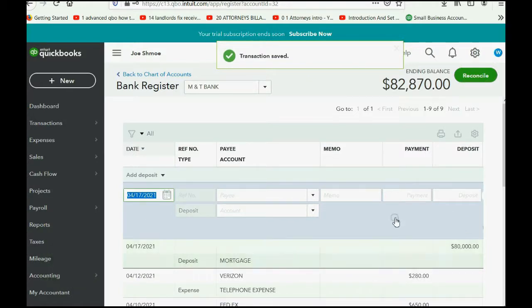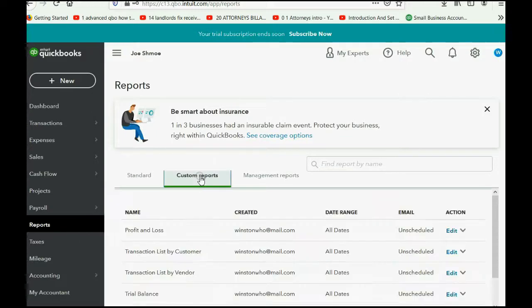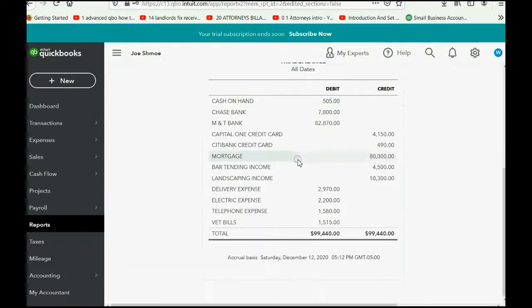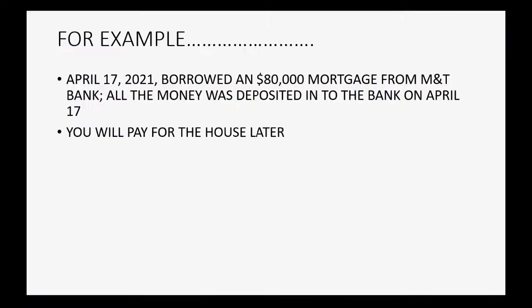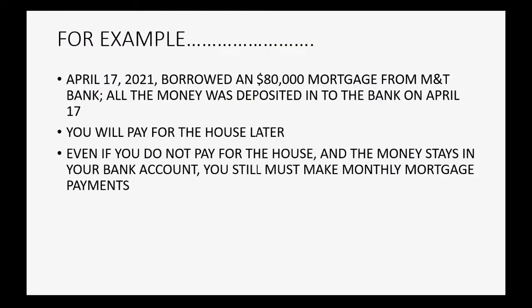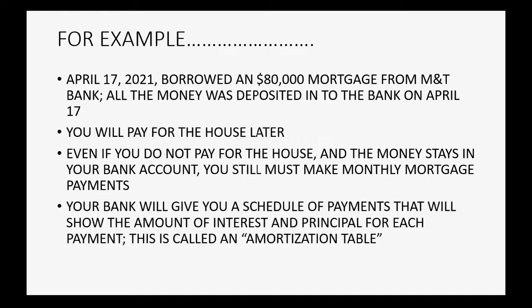Now let's take a look at the results. When we click Reports and then Custom Reports, Trial Balance, you can see there's an $80,000 mortgage, and you can see $80,000 has been added to the M&T Bank account. You should know that even if you do not pay for the house and the money stays in your bank account, you still must make monthly mortgage payments. Your bank will give you a schedule of payments showing the amount of interest and principal for each payment — that's called an amortization table — and we will talk more about that and actually making the monthly payments in the next video.